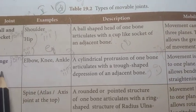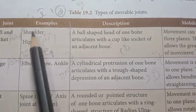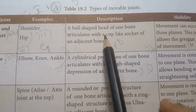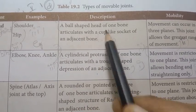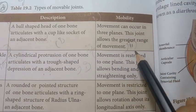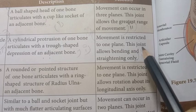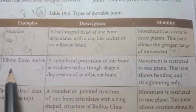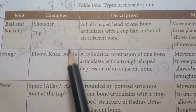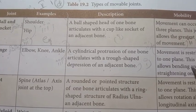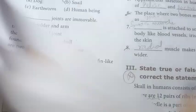Ball and socket joint: The round end of one bone articulates with a cup-like socket of an adjacent bone. Movement can occur in three planes; this joint allows a greater range of movement. Examples: shoulder and hip. Hinge joint: Movement is restricted to one plane; this joint allows bending and straightening only. Examples: elbow, knee, ankle.